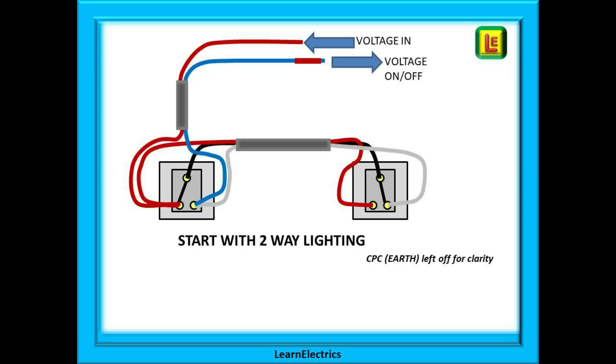Let's begin by looking at our existing two-way circuit. Voltage enters the circuit from the ceiling rose and depending on the position of the switches, the output voltage back to the ceiling rose is switched on and off.